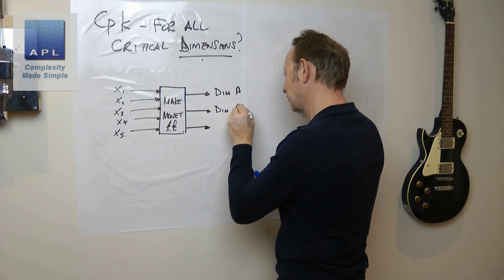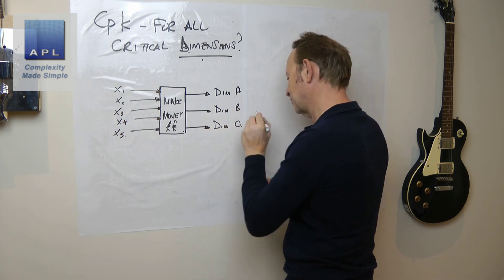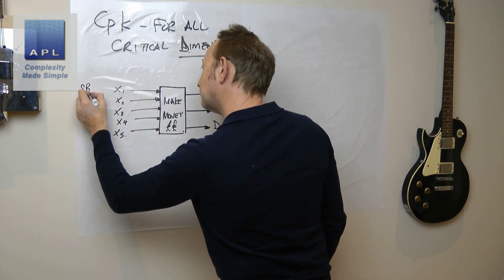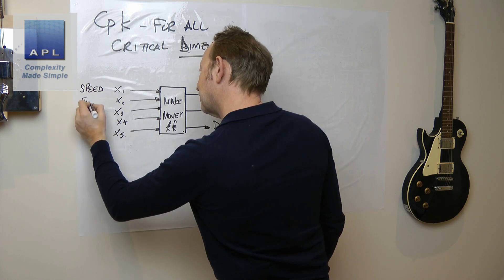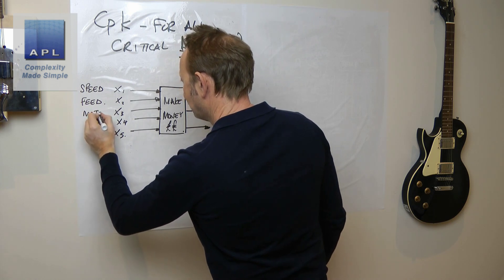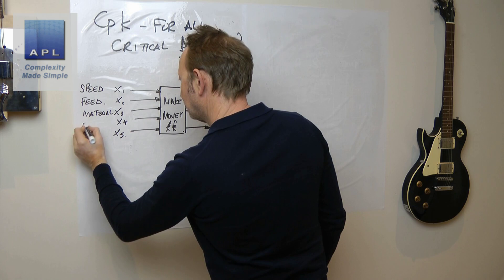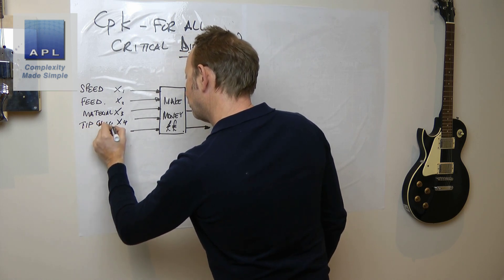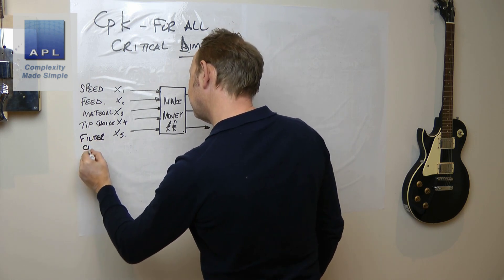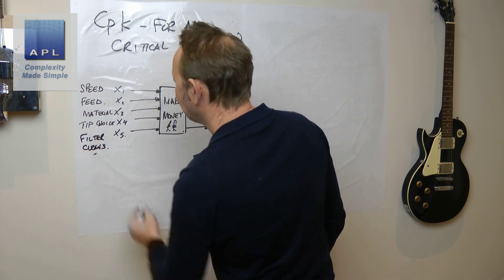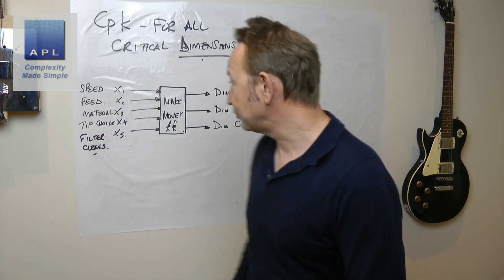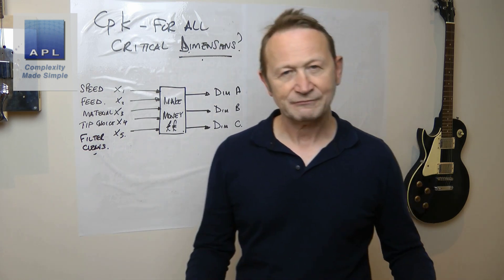This is a machining process, so this is speed, feed, maybe material selection, tip choice, maybe cleaning the filter out - just an example of what the variables might be on a machining process.